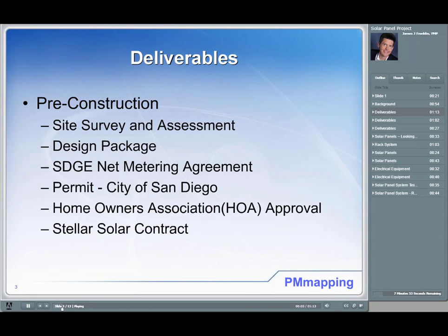Some of the key deliverables for the pre-construction phase are site survey and assessment. We first had to evaluate the roof, determine how many panels, and assess the monthly utility usage — that would be input into the design package. The design package included drawings, a plan view, electrical drawings, structural drawings, product data sheets for the panels, and which microinverter we were going to use. We also had to prepare, via the web, the net metering agreement — the agreement with San Diego Gas & Electric where we could return generated power back into the grid.